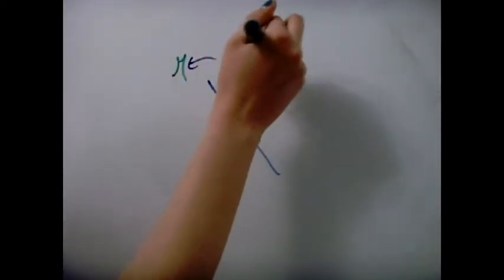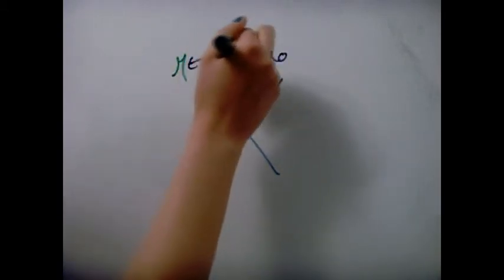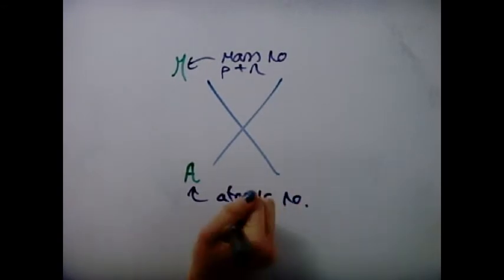This is the mass number and it is the number of protons and neutrons in the nucleus. This is the atomic number and it is the number of protons in the nucleus.